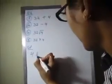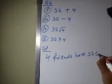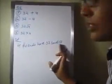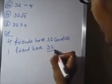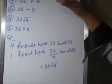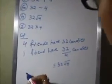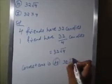Four friends have 32 candies distributed equally, meaning each friend gets an equal number. So one friend gets 32 divided by 4 candies. Checking the options: 32 + 4 — no; 32 − 4 — no; 32 ÷ 4 — yes. The correct answer is H: 32 ÷ 4.